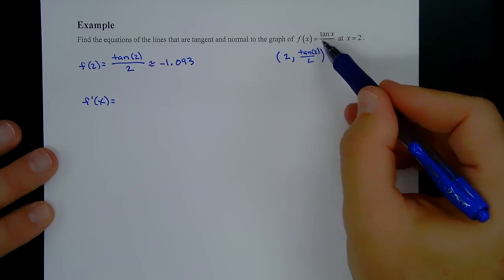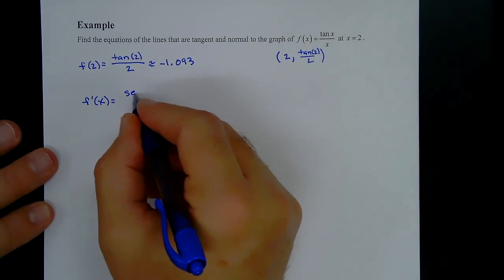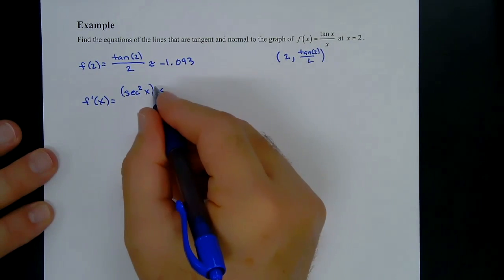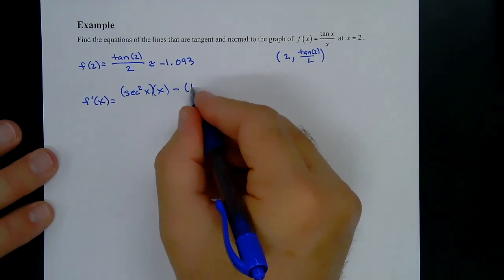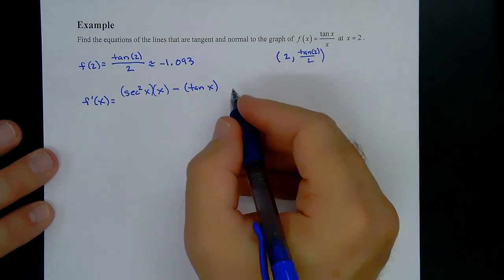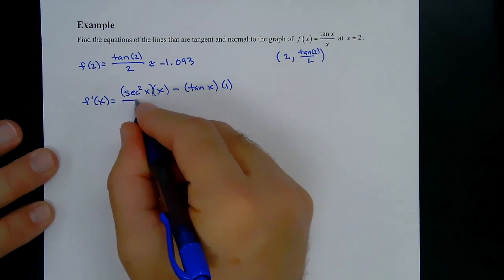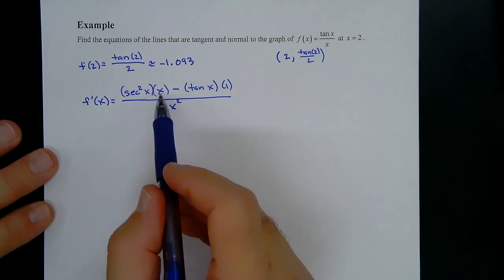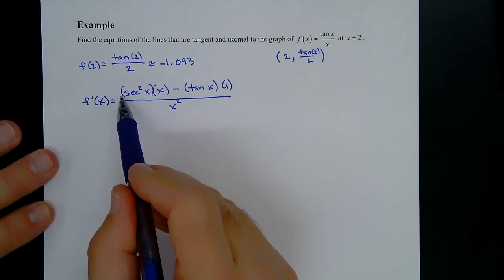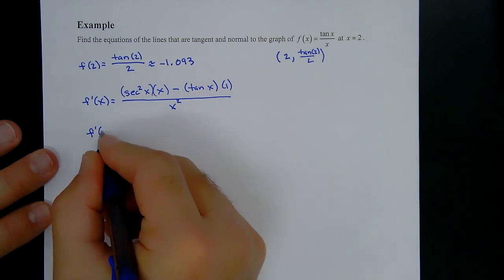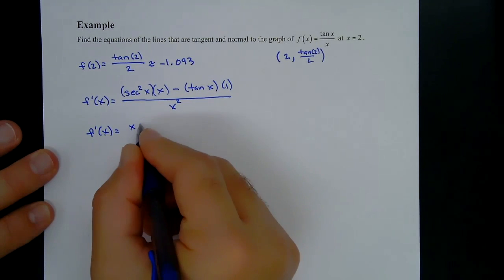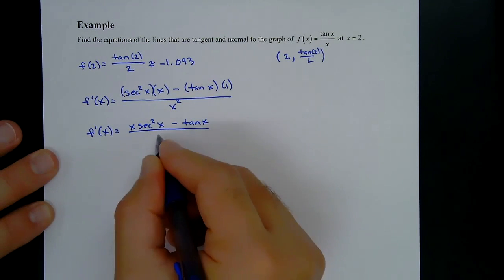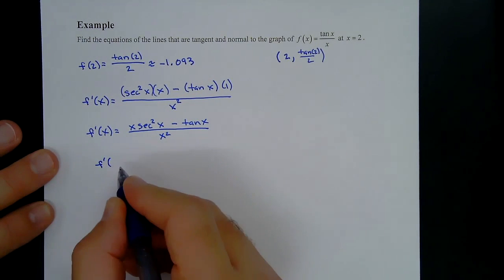Applying the quotient rule: f′(x) = [sec²(x) · x − tan(x) · 1] / x². Rearranging to put x in front: f′(x) = [x·sec²(x) − tan(x)] / x². So f′(2) = [2·sec²(2) − tan(2)] / 4.